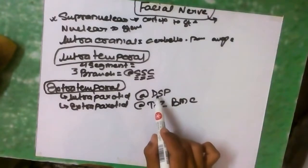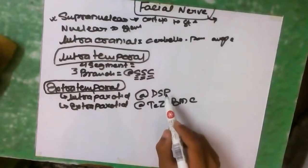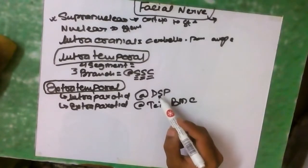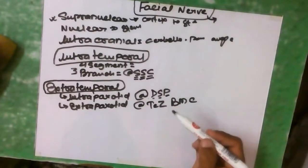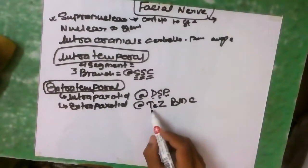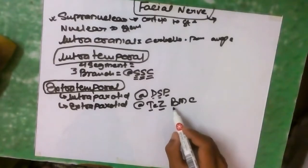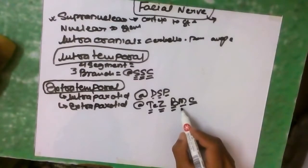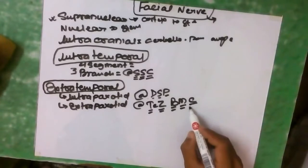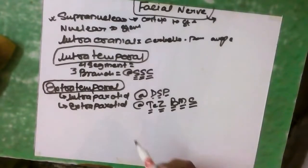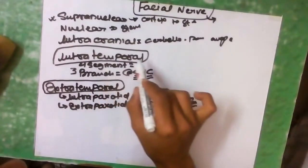The intraparotid region gives three more branches remembered as DSP: nerve to Digastric, nerve to Stylohyoid, and Preauricular nerve. The terminal branches of the facial nerve are remembered as TZBMC — Temporal, Zygomatic, Buccal, Mandibular, and Cervical — starting from the top of the face and going downward.